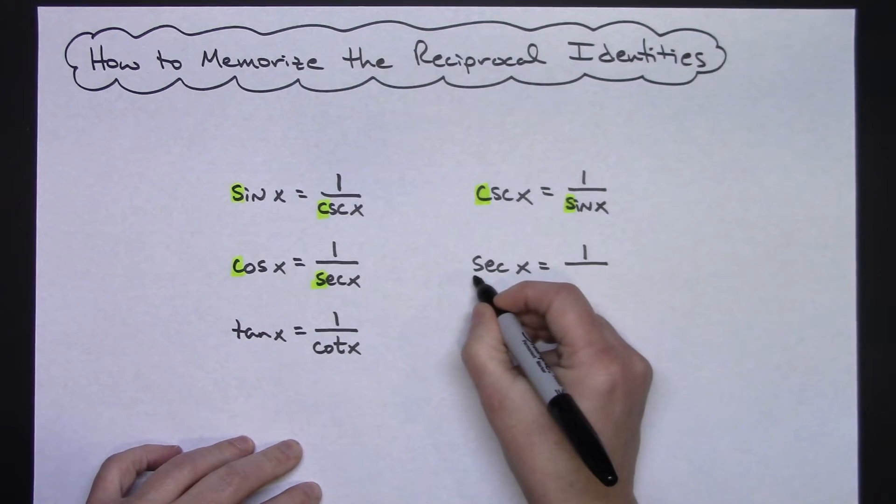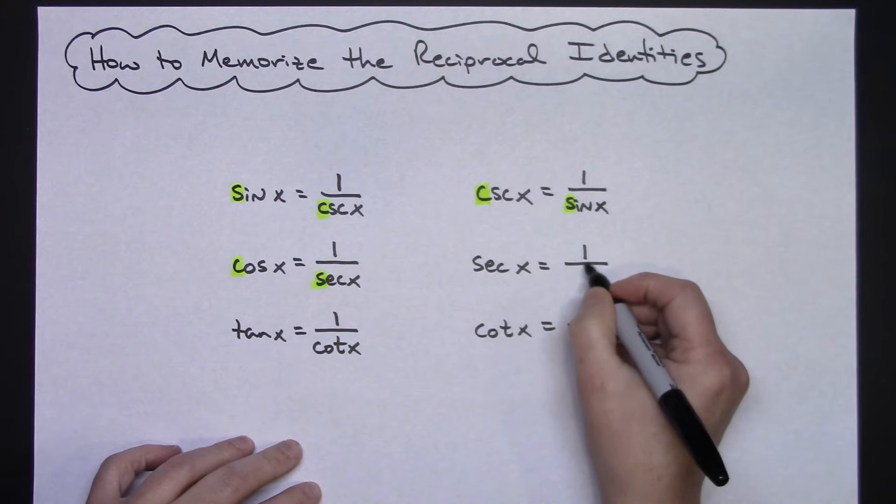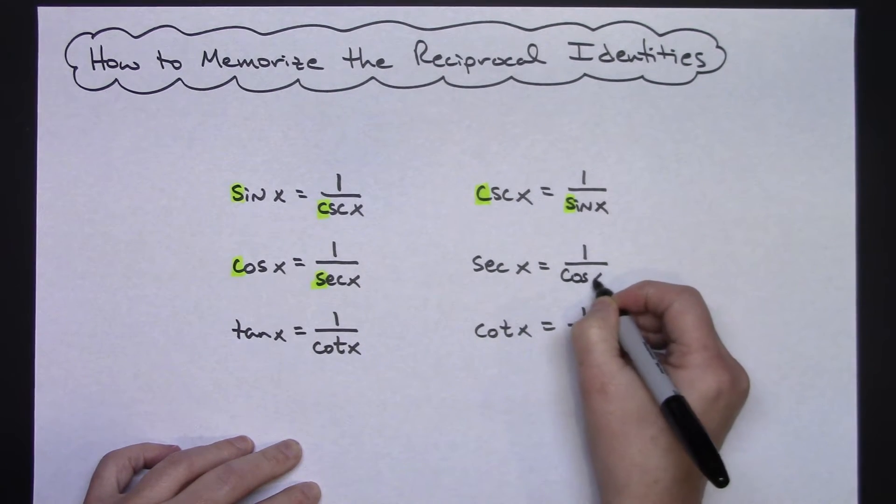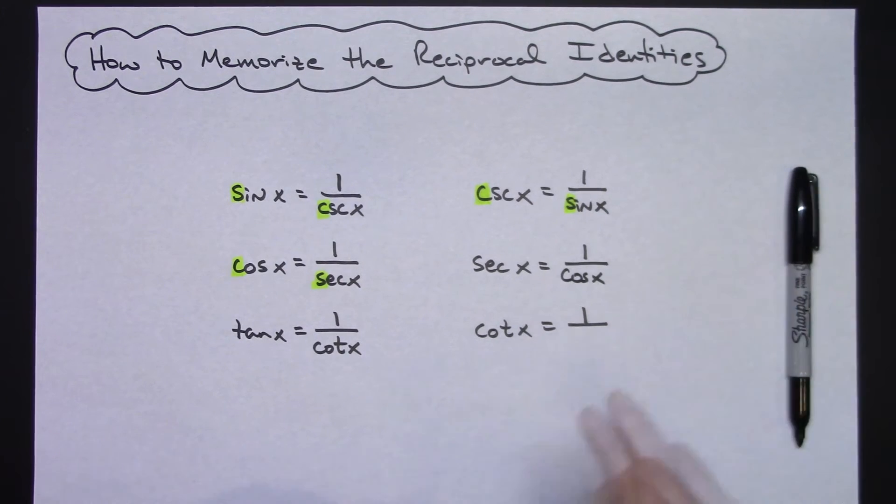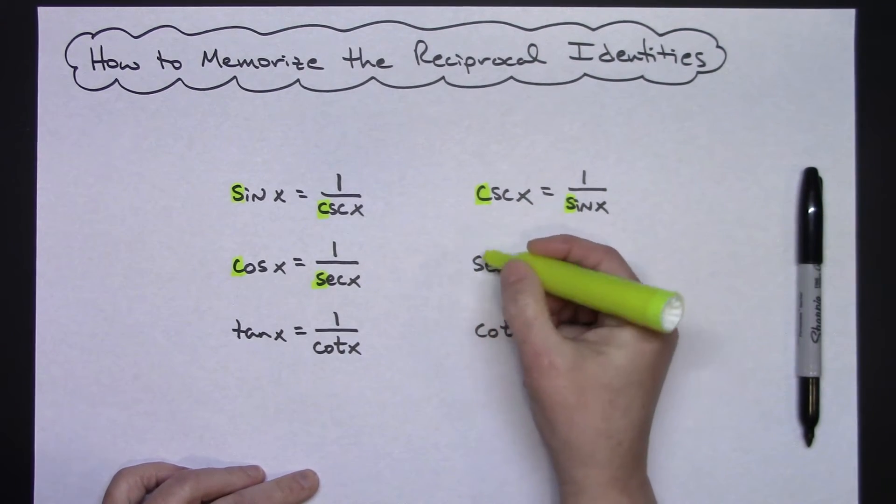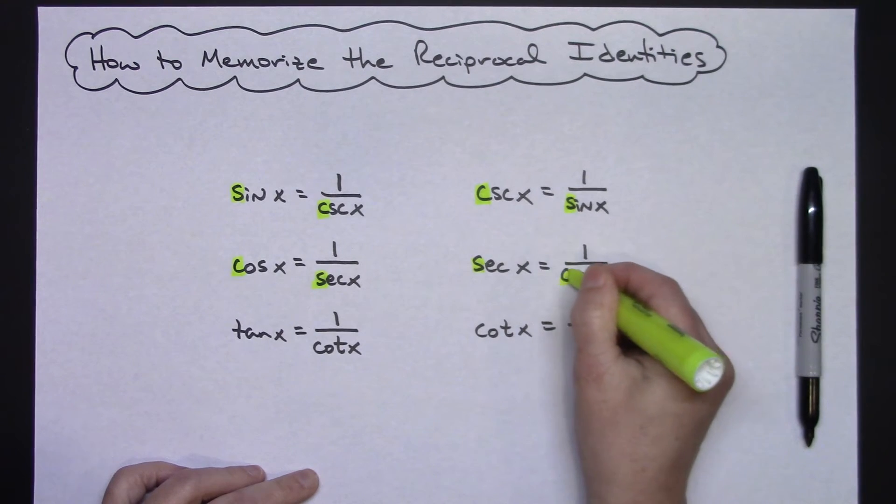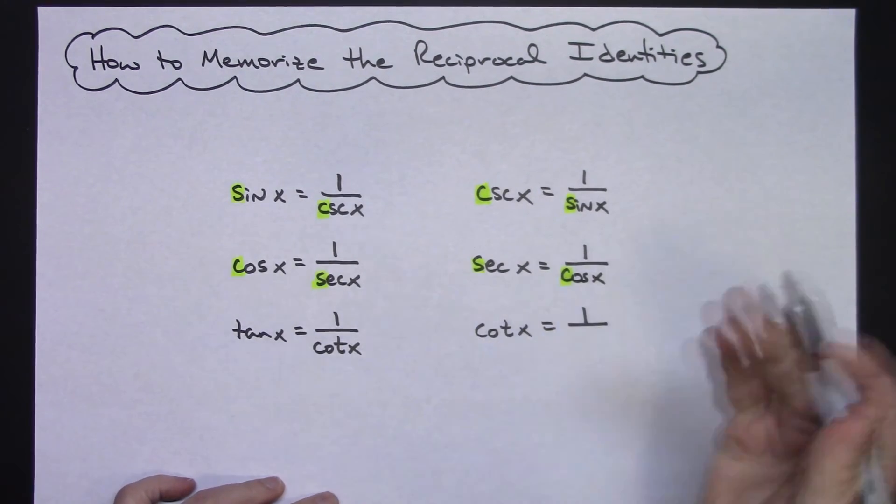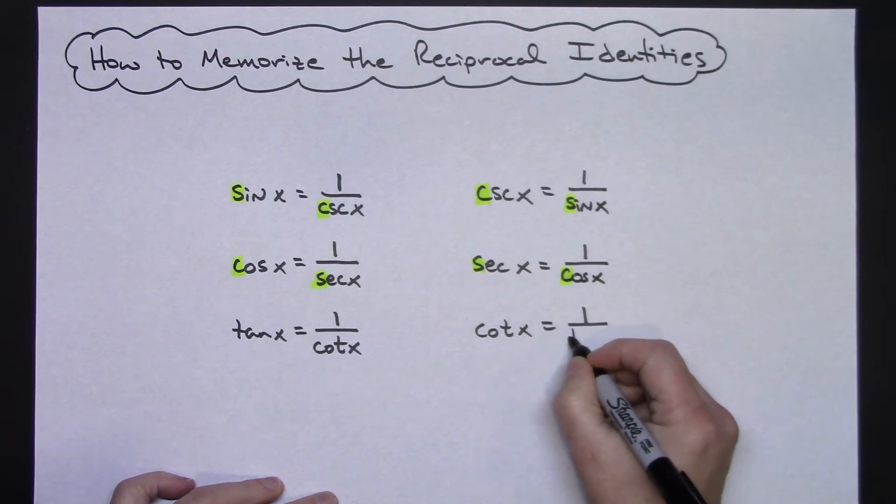So you've got that C and S thing going on on these as well. If this is secant, it starts with an S, its reciprocal identity has to start with a C, so it'll be cosine x. The S and C again should help you remember those. And then cotangent, its co-function would be tangent x.